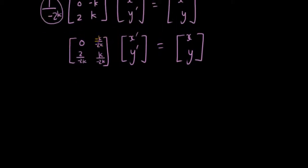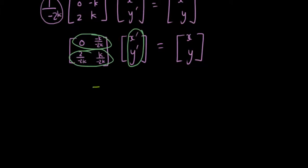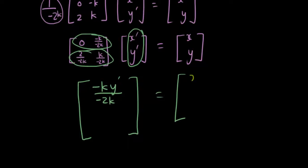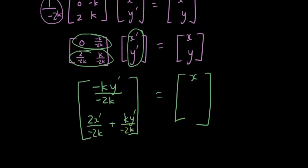We perform the matrix multiplication, rows times columns. The first row gives: 0·x' + (−k/−2k)·y' = x, which simplifies to −k·y'/−2k = x. The second row gives: 2x'/−2k + k·y'/−2k = y.